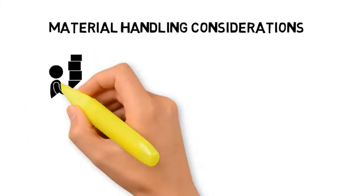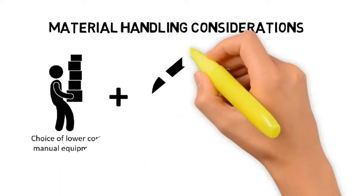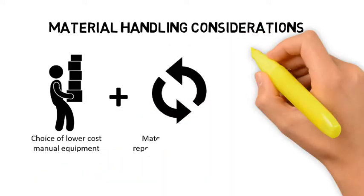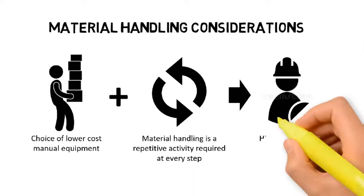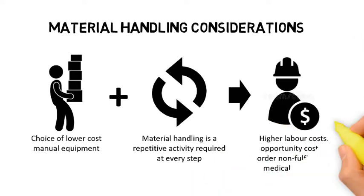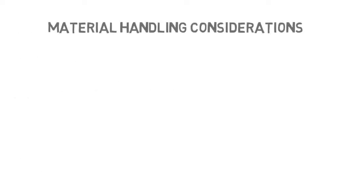When considering this trade-off, companies need to take a more holistic approach. For example, a company may choose to use lower-cost manual equipment to save costs. However, material handling is a repetitive activity required at every step of warehouse processes. If the volume is high, warehouse workers may not be able to cope. The company ends up with higher labour costs or faces opportunity costs of order non-fulfilment. In a worst-case scenario, workers may be injured due to the strain of using manual MHE.